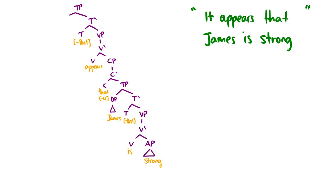Here is a complicated sentence: It appears that James is strong. Here we have another expletive it. How do we know? Well, we can take a look at the verb appears. And appears selects for a CP complement, but it does not select for any other theta role. There is no subject theta role, or there's no theta role for a subject.